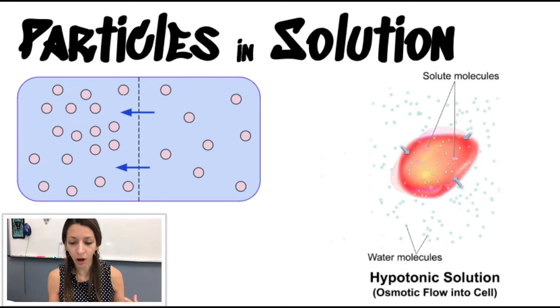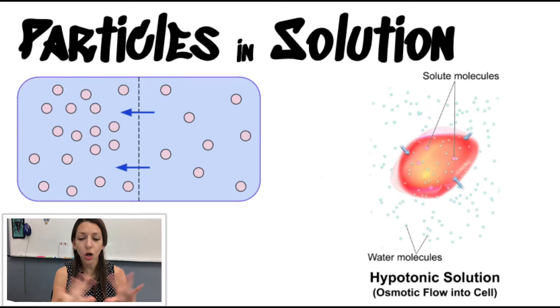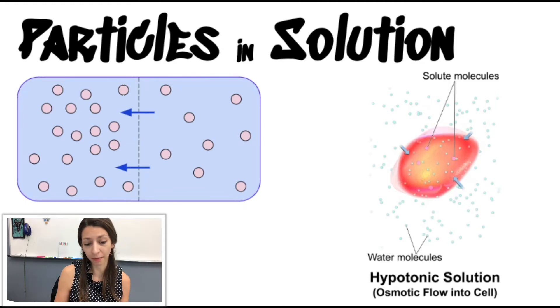All right. So hypotonic is the opposite. There's a higher concentration of solute molecules on the inside of the cell and a lower concentration on the outside of the cell, which means there's a higher concentration of water outside and lower inside. So of course, where do molecules go? High to low. Always. Water flows into the cell. There's an osmotic flow into the cell. That cell will swell and then sometimes even burst.